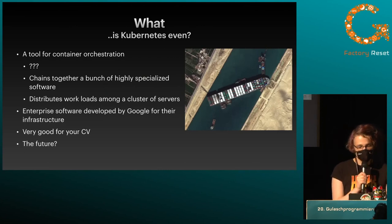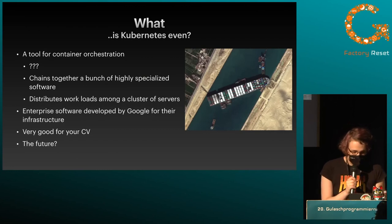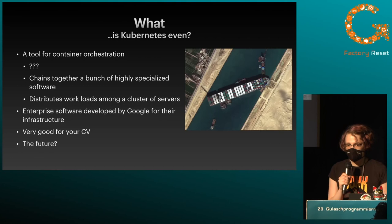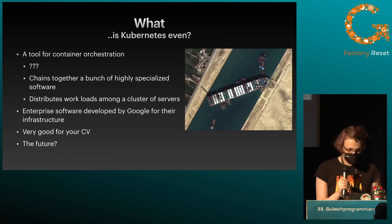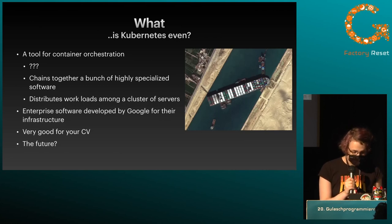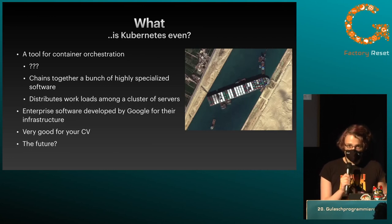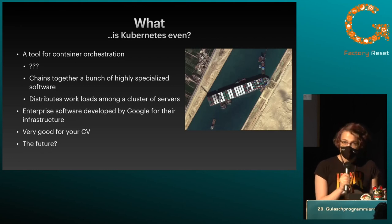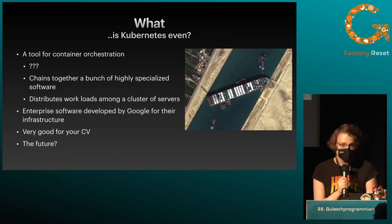What is Kubernetes? It's a tool for container orchestration — basically it chains together a bunch of very specialized software to distribute workloads across multiple servers. It's enterprise software originally developed internally by Google, but open source. It runs Google, so it's as enterprise as you can get. It's also very good for your CV. And maybe it's the future — some people are definitely going to be telling you that it is.